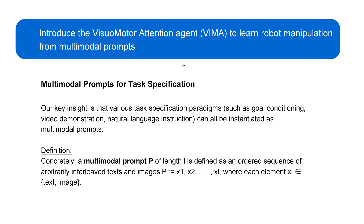As you know, if we want to have control over a robot arm, for example, we have a lot of task specification options. We have goal conditioning, we have some video demonstration, or we have simply some instructions in natural human language.